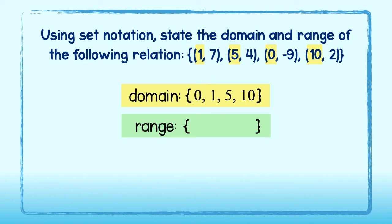Since the range is the set of all y values, the range is negative 9, 2, 4, and 7. Go ahead and write those in your brackets. Negative 9, 2, 4, and 7. And there you have it. That is the domain and the range of the relation. Great job!